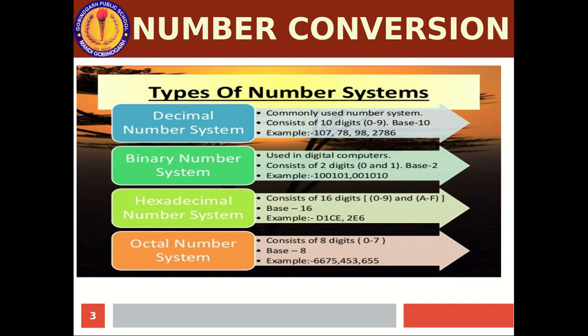The decimal number system is the most commonly used number system in daily life. It consists of 10 digits, 0 to 9. Don't forget to include 0. For example, 10778982786 — every individual digit will lie between 0 to 9. Similarly, the binary number system is what digital computers can understand, and it has only two digits: 0 and 1, with base 2.